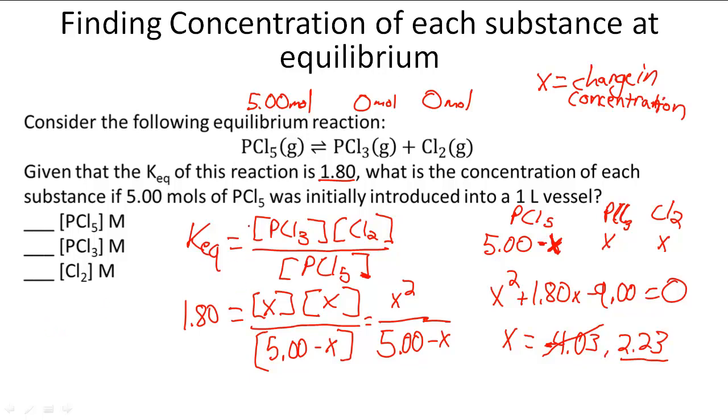Now all we have to do is go back to our concentrations and subtract. 5.00 minus 2.23 is going to get us different moles of that. Since it's a one liter vessel, we can assume that when we divide by 1, we also get a molarity of 5. So molarity here is going to reflect what we subtract. 5.00 minus 2.23 is going to get me 2.77 molarity for PCl5.